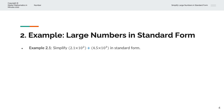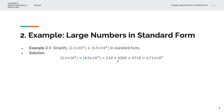In the first example, we're asked to simplify 2.1 times 10 to the power of 2 plus 4.5 times 10 to the power of 3 in standard form. We can rewrite these numbers as 210 plus 4,500, which equals 4,710. Rewriting in standard form gives 4.710 times 10 to the power of 3. Here 4.710 is between 1 and 10, and 3 is a positive integer, so this is in standard form as required.